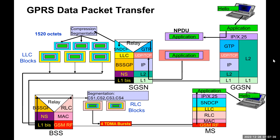Now moving from the SGSN to the BSS part: the BSSGP layer, below the LLC layer, provides routing information to the RLC block over the frame relay physical layer. The BSSGP also adds a header to this LLC block, which contains essential information for the RLC and MAC layers on the air interface for transmitting this block. The BSSGP on the BSS end then relays this information to the Radio Link Control (RLC) layer.